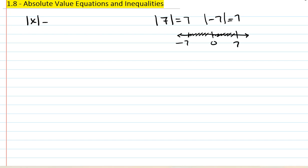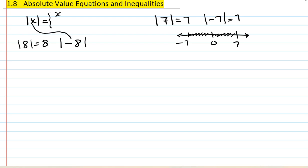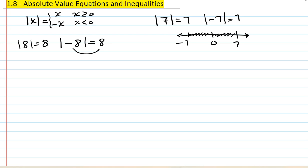The answer to absolute value must be positive because we don't care about direction, only the magnitude. In general, absolute value of x equals x itself when x is greater than or equal to 0. But if the value inside is negative, we write negative x to force the result positive — so absolute value of x equals negative x for x less than 0.